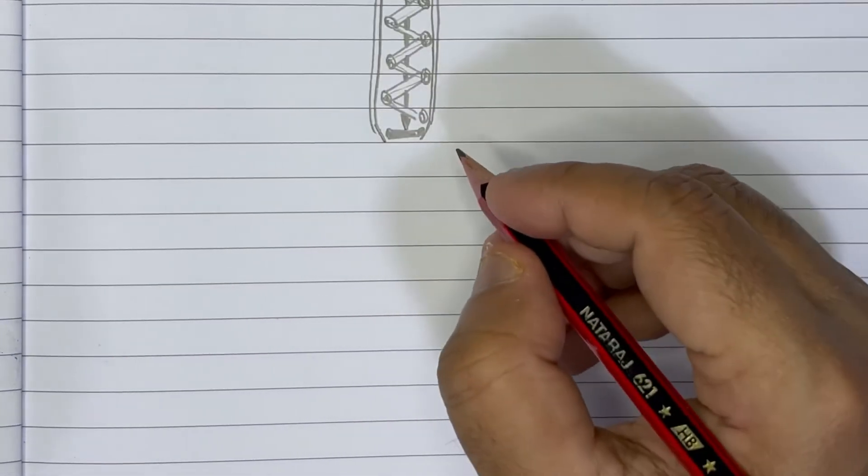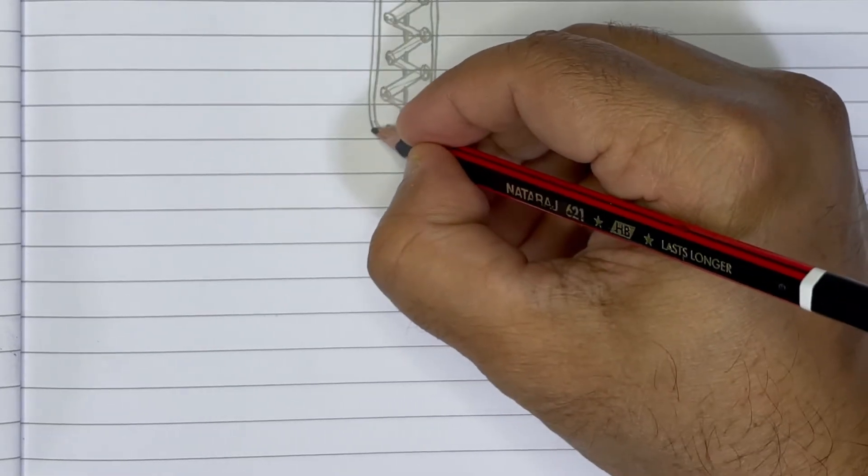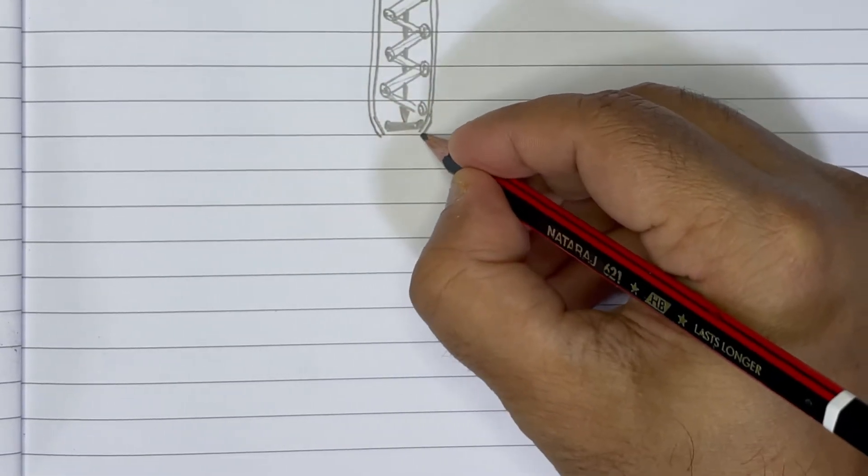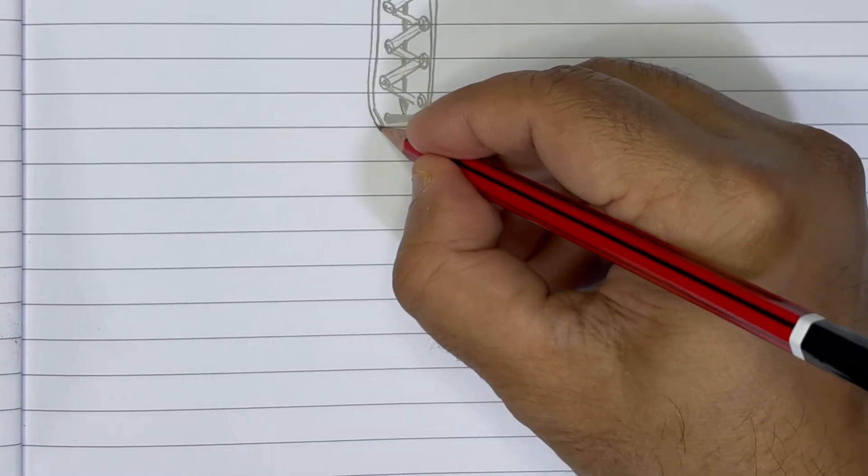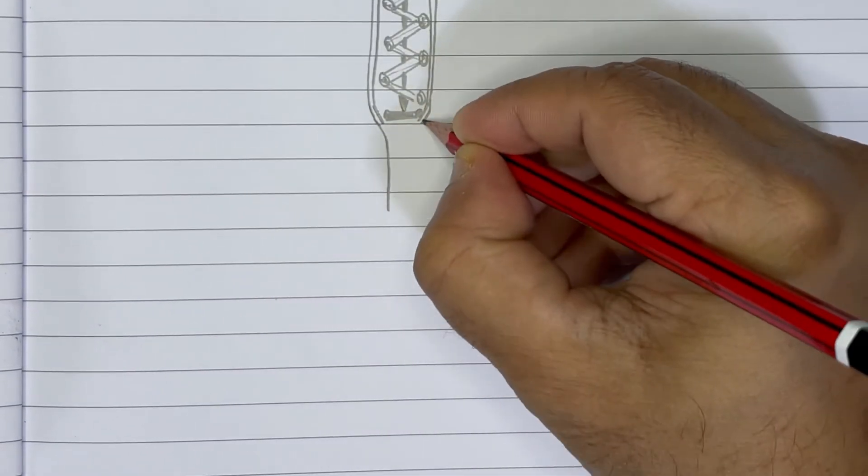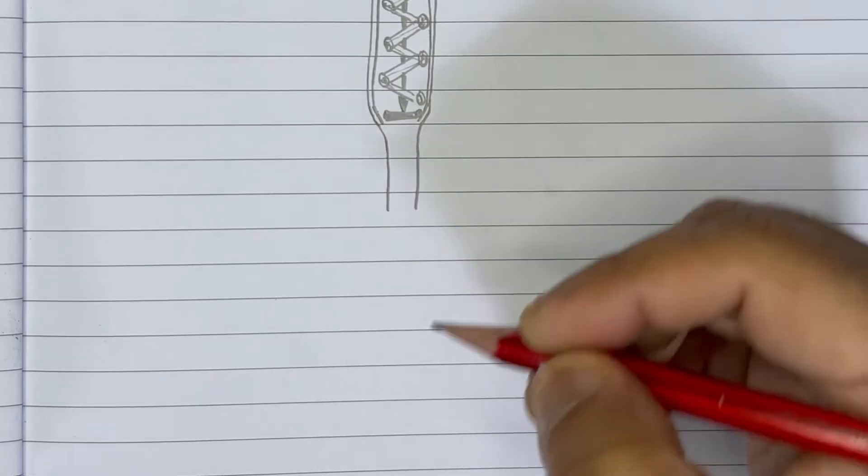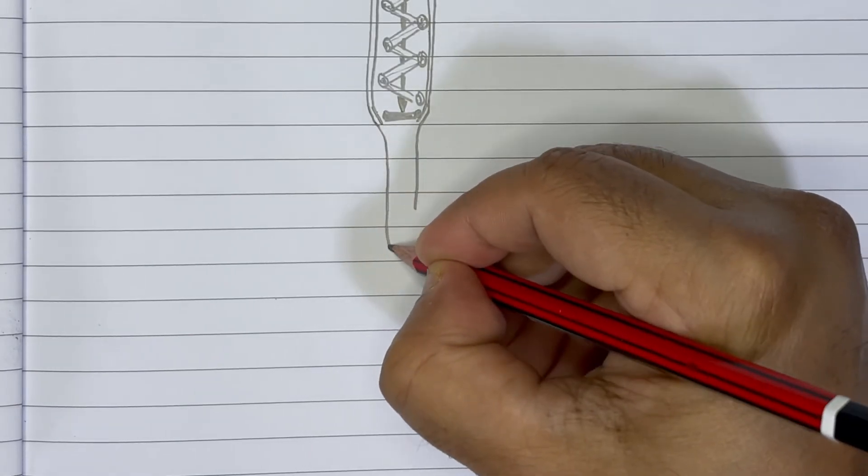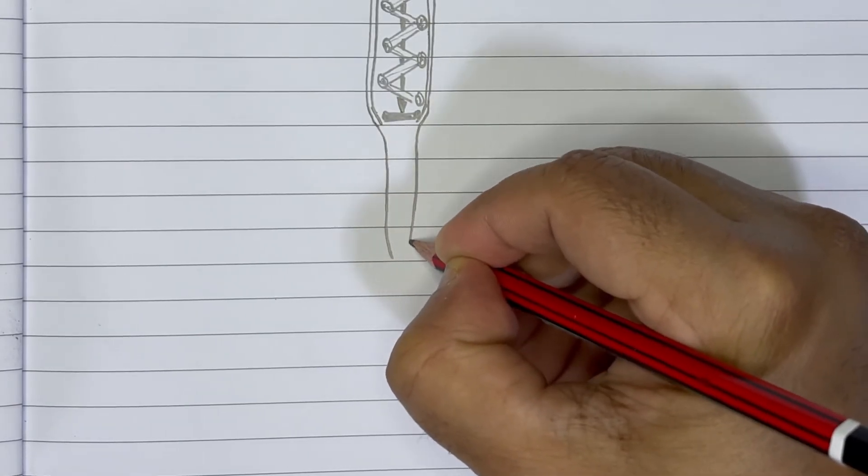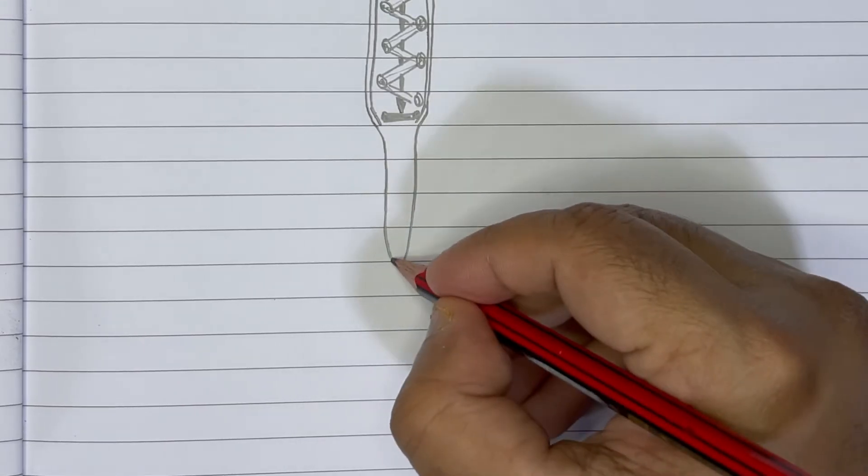The outer line will just come to this tip and then we'll just make a much more thinner shape like this for some length. Then again it will become much more thinner.